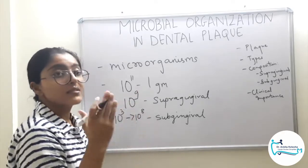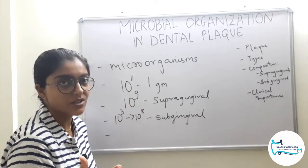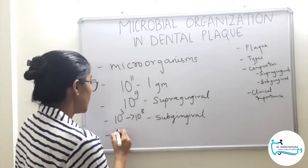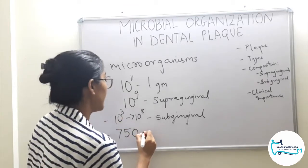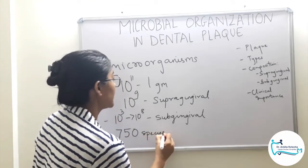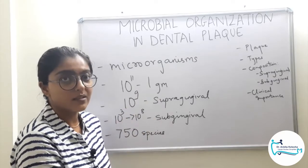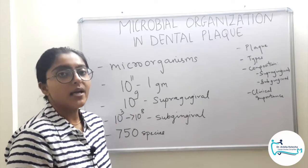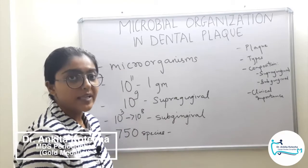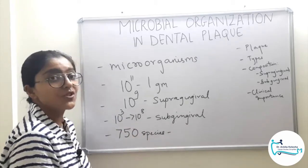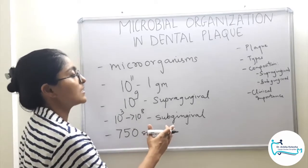One more number to remember — this is an interesting update. If you read Carranza 10th edition, it mentions more than 500 species. But the 13th edition states almost 750 species of microorganisms are present — that is 750 microbial philotypes. This includes all bacteria and other non-bacterial organisms such as archaea, fungi, viruses, and protozoa. This update is because of advancements in molecular techniques and microbiological investigations, which allowed identification of more and more types of microorganisms present in plaque.